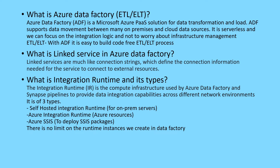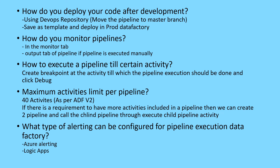The first type is Self-Hosted Integration Runtime, which is used for on-premises servers. You download and execute it from the Data Factory portal and activate it with the IR keys provided. The second is Azure Integration Runtime, used for Azure resources. The third is Azure SSIS Integration Runtime, used for deploying SSIS packages. For Self-Hosted IR, one integration runtime can connect up to four nodes, and there is no limit on the number of runtime instances you can create in Azure Data Factory.